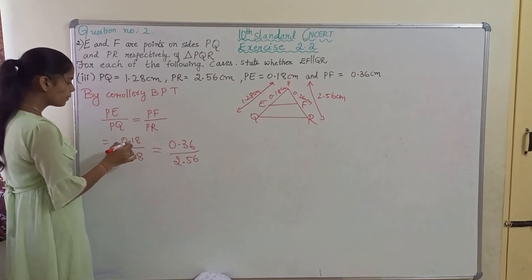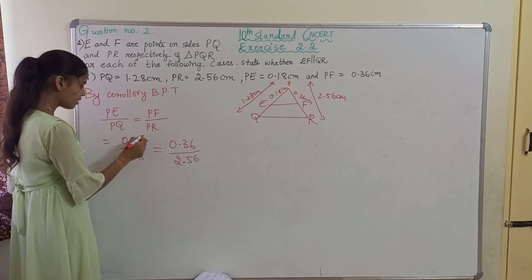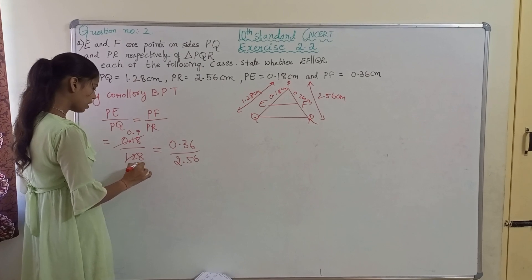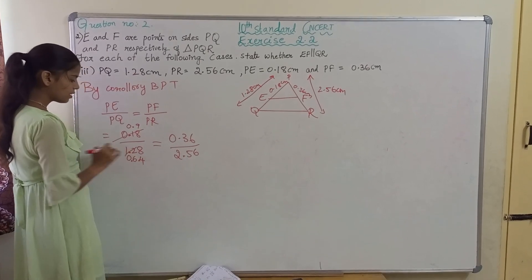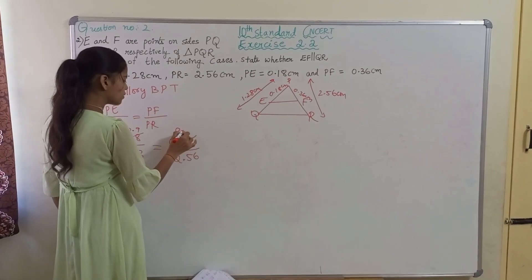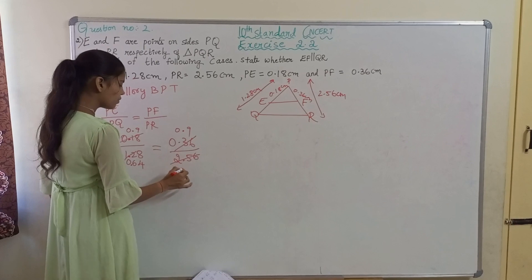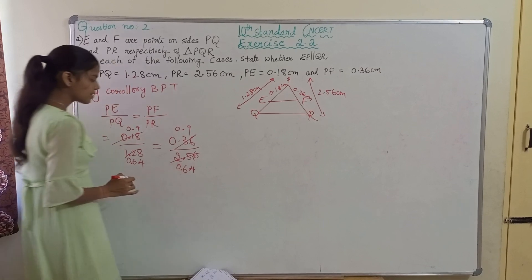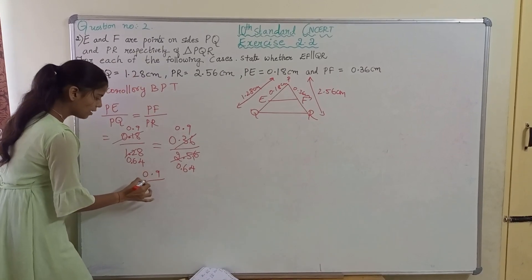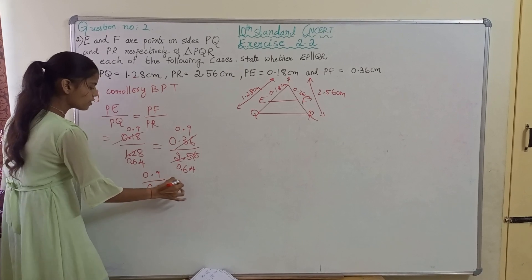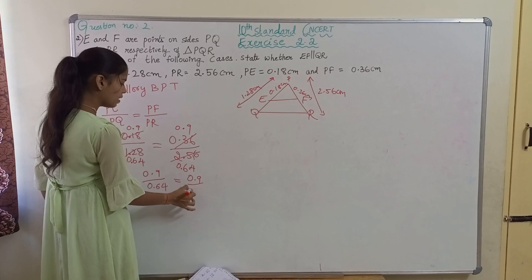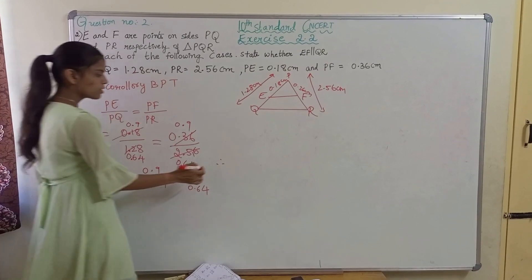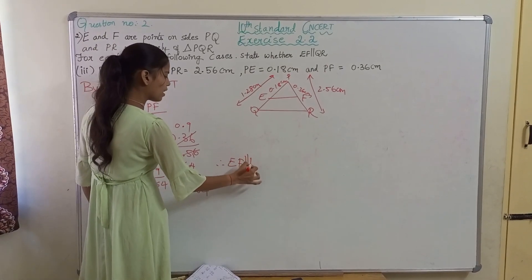Let us simplify. So 0.18 divided by 1.28: taking out common factors, 0.18 becomes 9 and 0.36 becomes 18 in some form. Simplifying both sides we get 0.9 by 0.64 equal to 0.9 by 0.64. So therefore in this case both ratios are equal, so EF is parallel to QR.